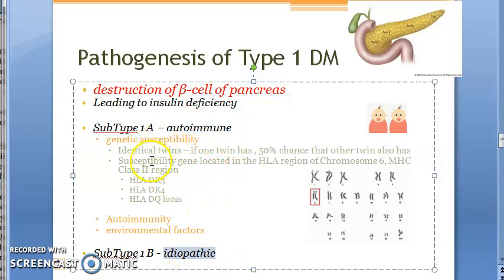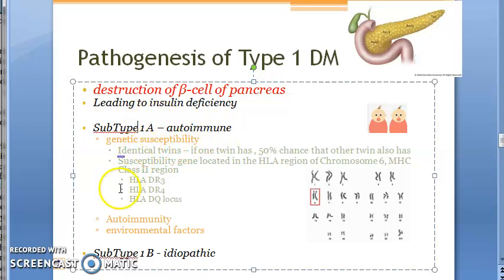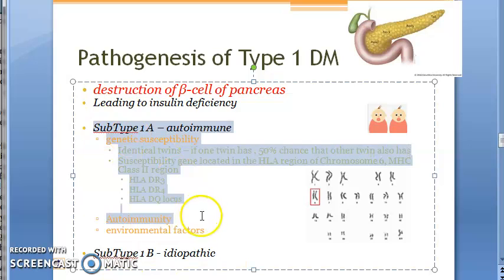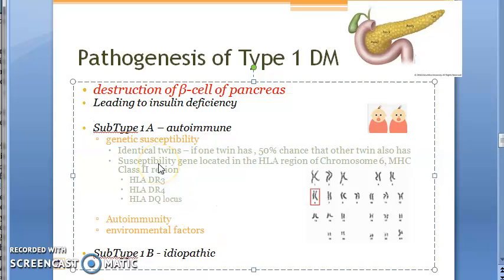There are two subtypes: autoimmune, which is subtype 1a, and idiopathic, which is subtype 1b. In idiopathic, we cannot actually find any autoimmune markers. For subtype 1a, we have to consider autoimmune mechanisms.